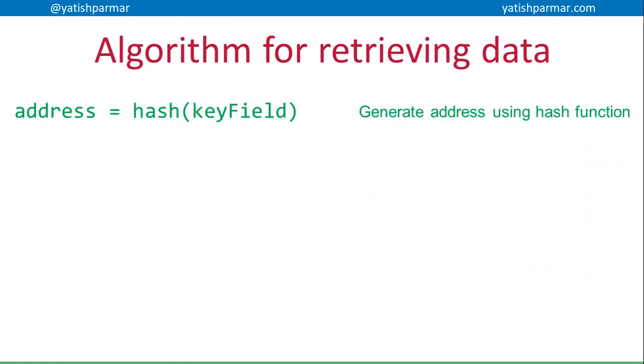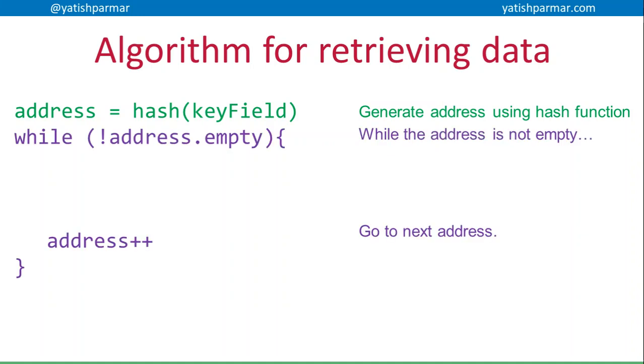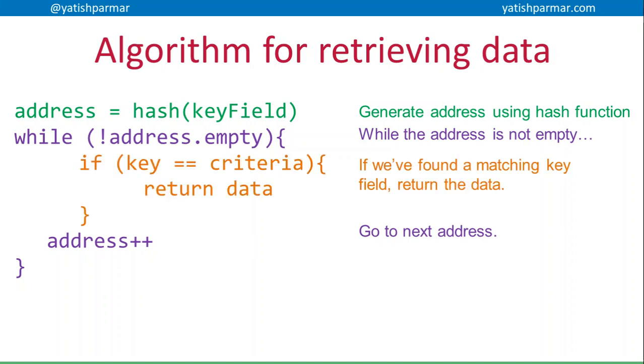So that algorithm for retrieving data: the address equals a hash of the key field. While the address is not empty, we're going to keep going to the next address. However, if the key equals the criteria that we're finding in that element, then basically we found a matching key field so we can return any associated data that's being stored. Otherwise, we're going to hit the end of the array and we need to return not found.